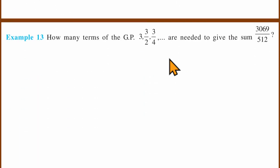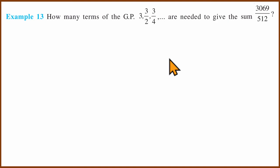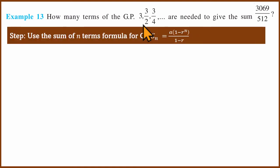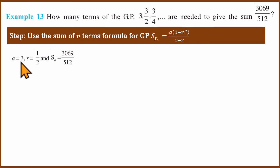Next example: how many terms of the GP are needed to give the sum 3069 divided by 512? Here a equals 3 and r equals 1/2, since the second term divided by the first term is one half. We set the sum of n terms equal to 3069 divided by 512 and substitute into the formula Sn equals a multiplied by 1 minus r^n divided by 1 minus r.